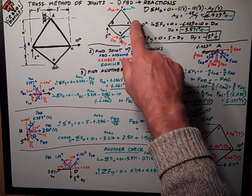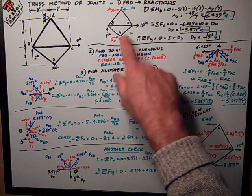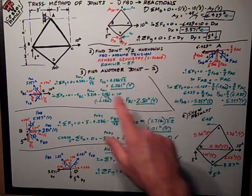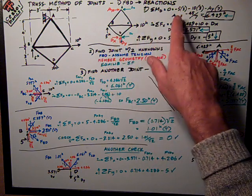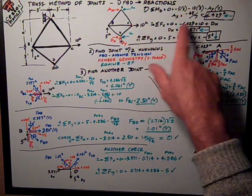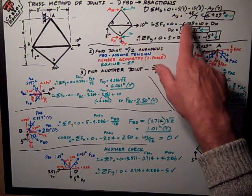Here I've done it up here. It takes some moments about D to solve for AX. I'm not going to repeat all the math to you, but there's the numbers, 5 kips times 3 feet, 10 kips times 3 feet.